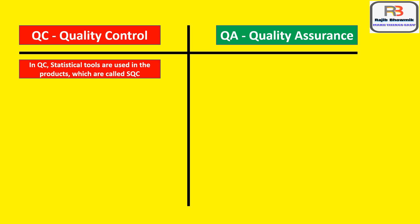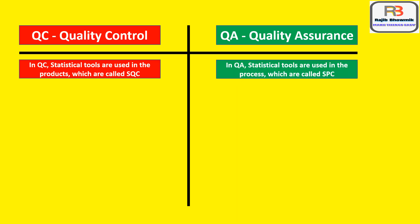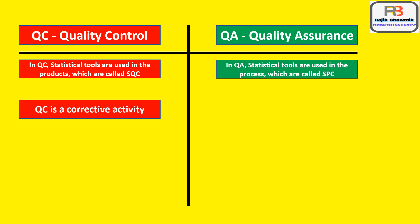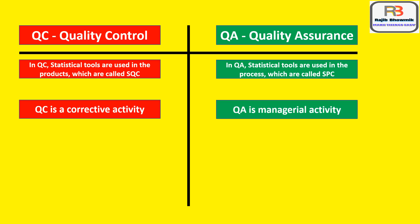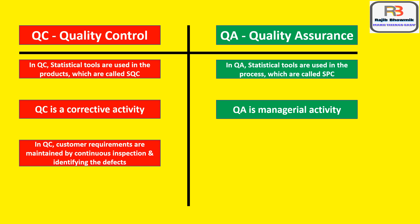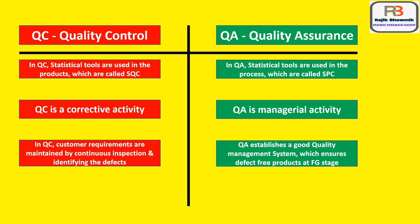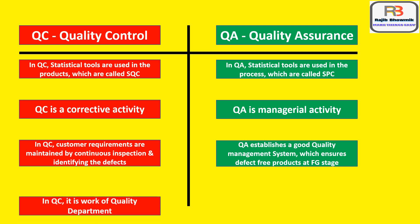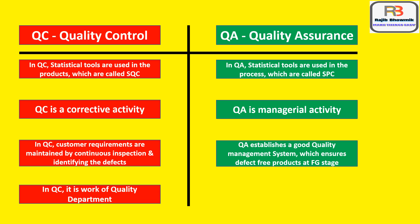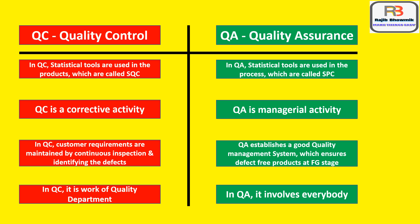In QC, statistical tools are used on products, which is called SQC — Statistical Quality Control. QA is a proactive and managerial activity. In QC, customer requirements are maintained by continuous inspection and identifying defects. QA establishes a good quality management system which ensures defect-free products at the finished goods stage. In QC, it is the work of the quality department. In QA, it involves everybody.